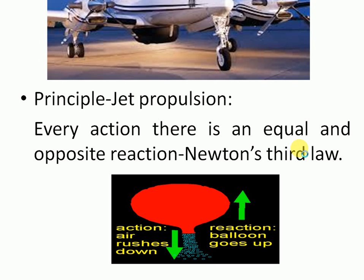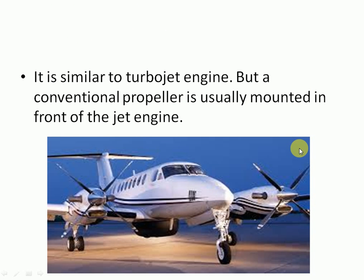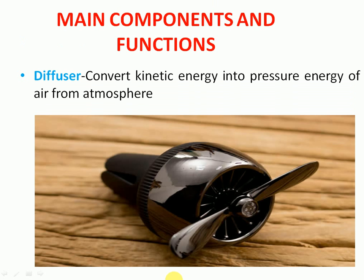It is similar to a turbojet engine, so the components are the same. However, a conventional propeller is usually mounted in front of the jet engine. This propeller mounted in front of the engine is the one big difference between a turbojet and a turbo propeller engine.